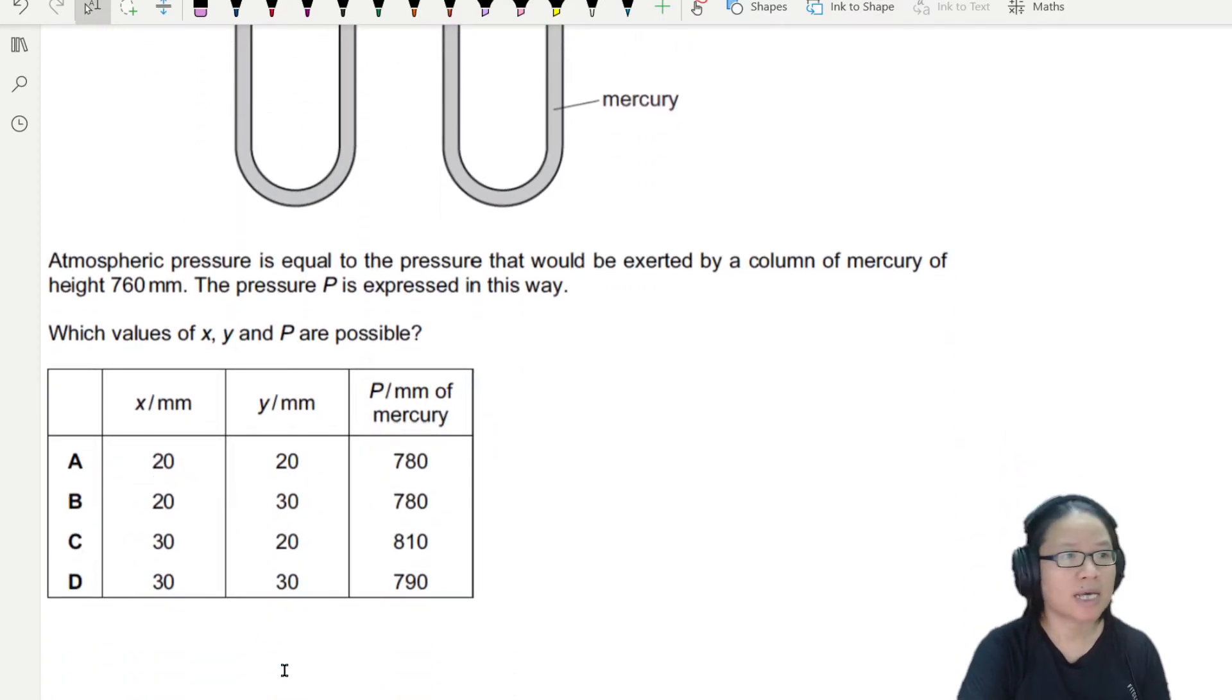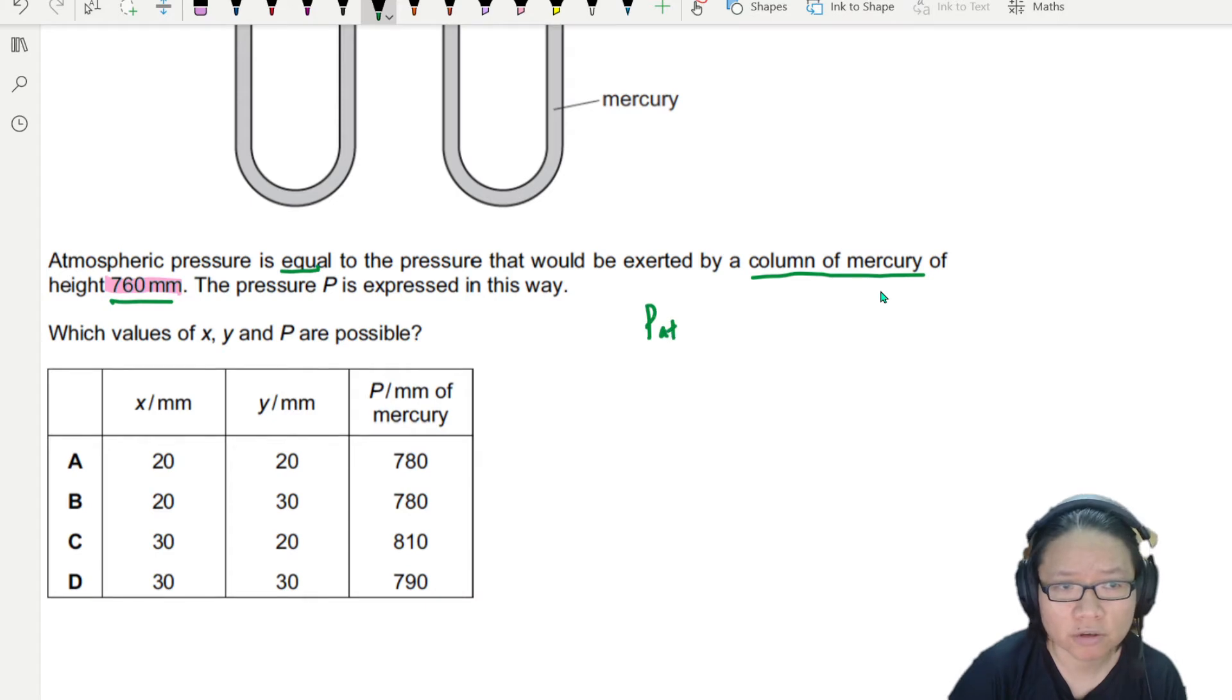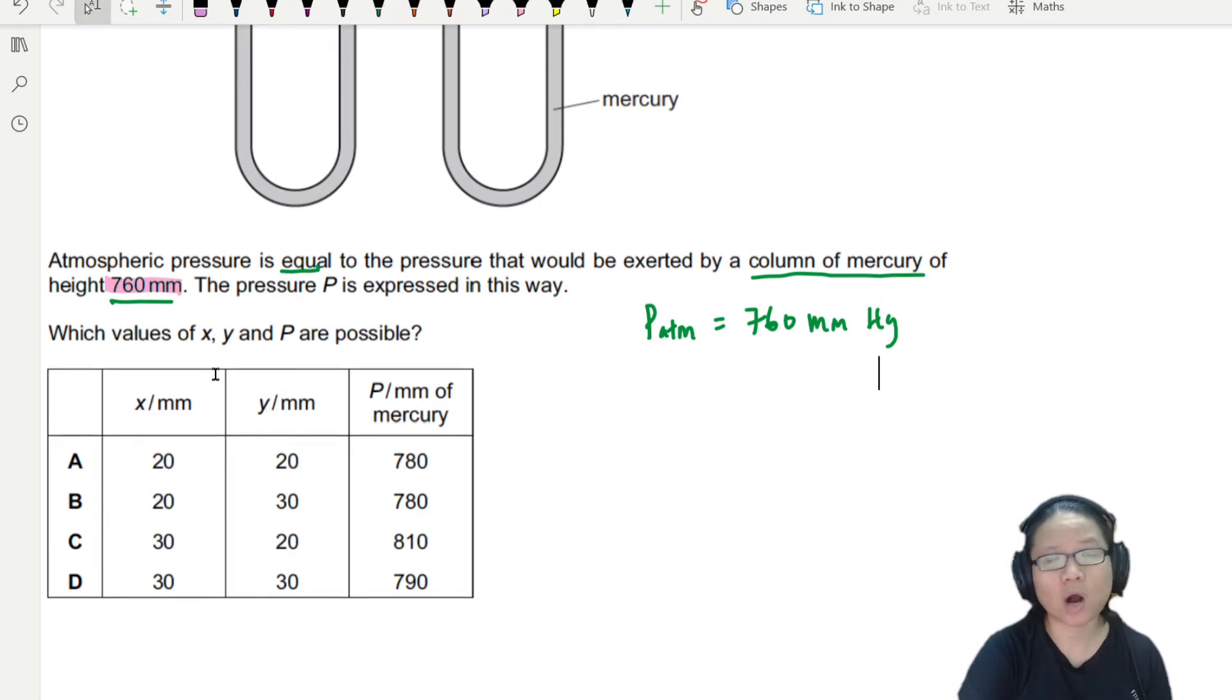Atmospheric pressure is equal to the pressure that would be exerted by a column of mercury of 760 mm. So our atmospheric pressure is equal to 760 mm of a column of mercury. You can treat all this atmospheric pressure as 760 mm mercury. Of course, if we want to convert to Pascal, we can use H rho g, but I don't think we need to because the question is asking us which values of X, Y, and P are possible. And all the values are still in mm mercury. So we're going to stick to that unit.